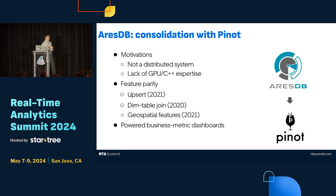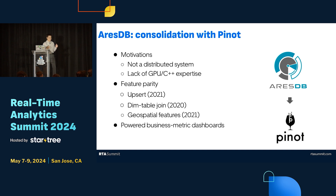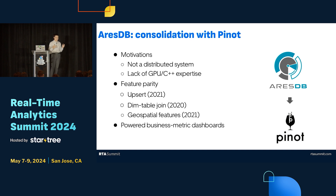Why did we want to consolidate? There are a couple of reasons. One issue is that IrisDB was not a distributed system — it's a single machine, so there's an upper limit on how much data you can store. Extending a single-machine system into a distributed one requires a lot of effort. Additionally, back then GPU was pretty new, and IrisDB was built in C++, but we didn't have too much C++ expertise at the time. At the leadership level, we wanted to address this challenge by consolidating with Pinot.